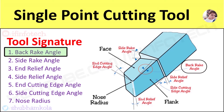If the slope face is downward towards the nose, it is a negative back rack angle. And if the slope face is upward towards the nose, it is a positive back rack angle. Back rack angle helps in removing chips away from the workpiece.